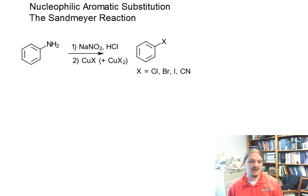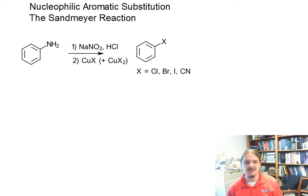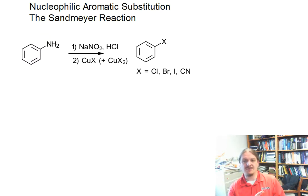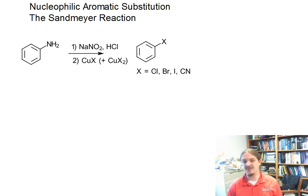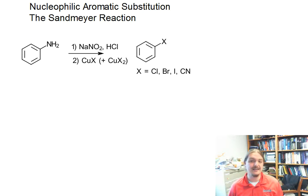In this reaction, X can be any of the common halogens we're used to seeing: chlorine, bromine, or iodine. Fluorine is another matter. But it can also be cyanide, which is an interesting way to put a cyano group or nitrile on the aromatic ring, because there's no easy electrophilic way to do that.